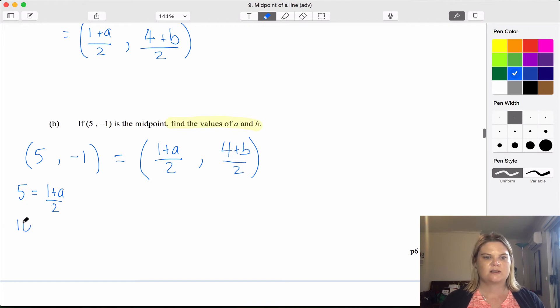And to find b, we need to make -1 equal this side: 4 plus b over 2. -2 equals 4 plus b. -6 equals b.